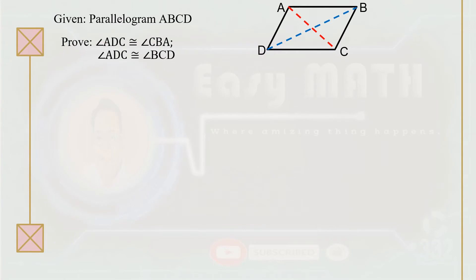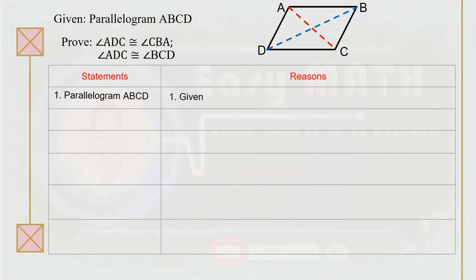Given parallelogram ABCD, we're going to prove that angle ADC is congruent to angle CBA, and angle ADC is congruent to angle BCD. Once again, we're going to use a two-column proof. First statement: parallelogram ABCD. Reason: the given.